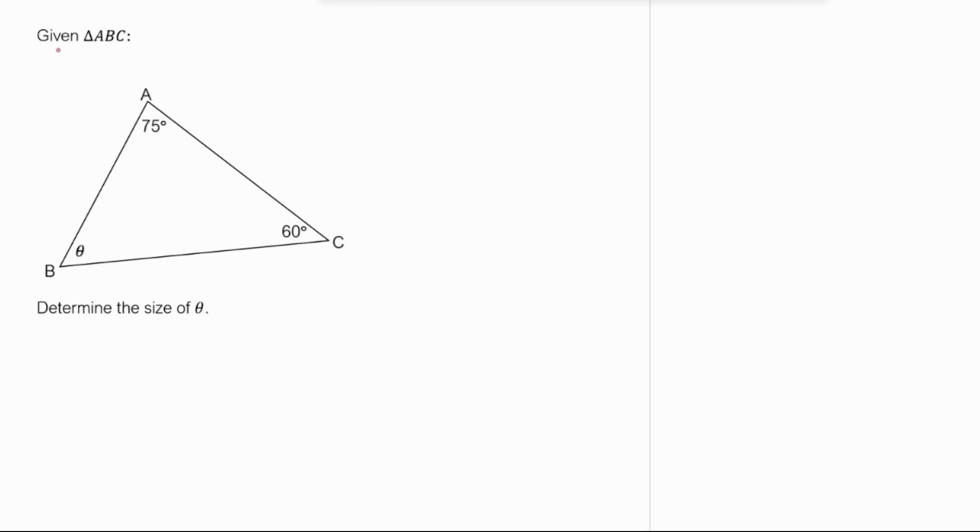Welcome back, let's do this question. Given triangle ABC, determine the size of angle theta. We know that the interior angles of the triangle add to 180 degrees, so angle A plus angle B plus angle C must give us 180 degrees.